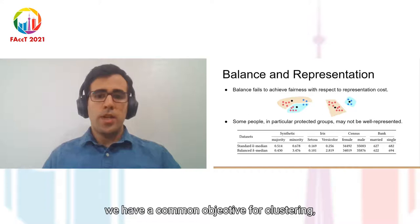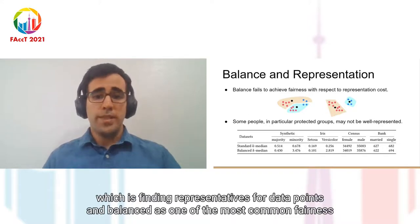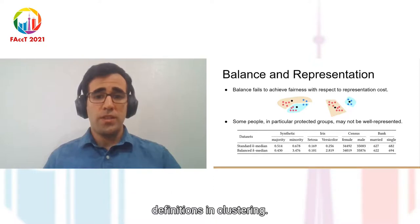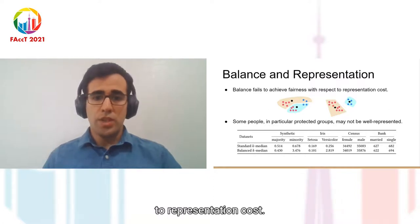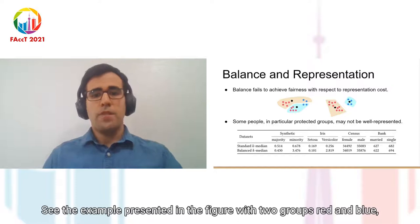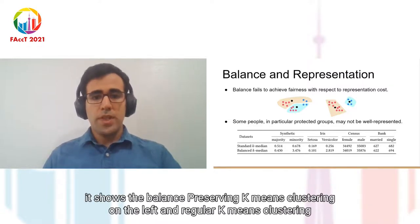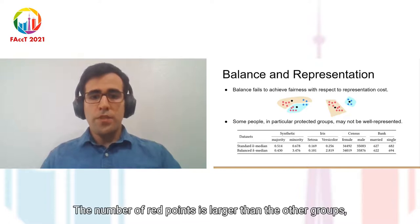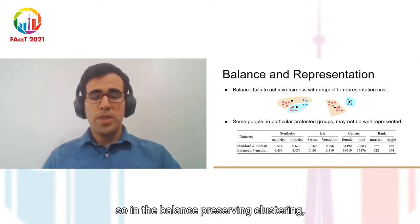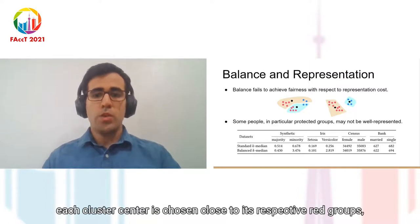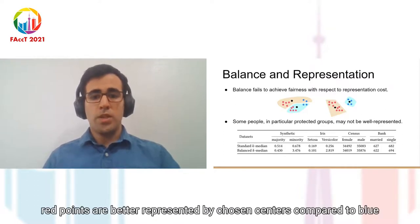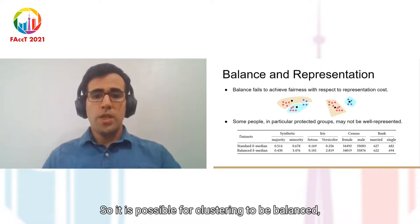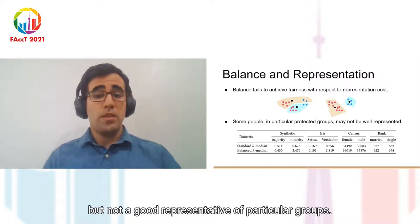So far, we have a common objective for clustering, which is finding representatives for data points and balance as one of the most common fairness definitions in clustering. So, the natural question would be if balance achieves fairness with respect to representation cost. See the example presented in the figure with two groups, red and blue. It shows a balance-preserving k-means clustering on the left and regular k-means clustering on the right. Here, the number of red points is larger than the other groups. So, in the balance-preserving clustering, each cluster center is chosen close to its respective red group centroid. As a result, red points are better represented by chosen centers compared to blue points. So, it is possible for clustering to be balanced, but not a good representative of particular groups.